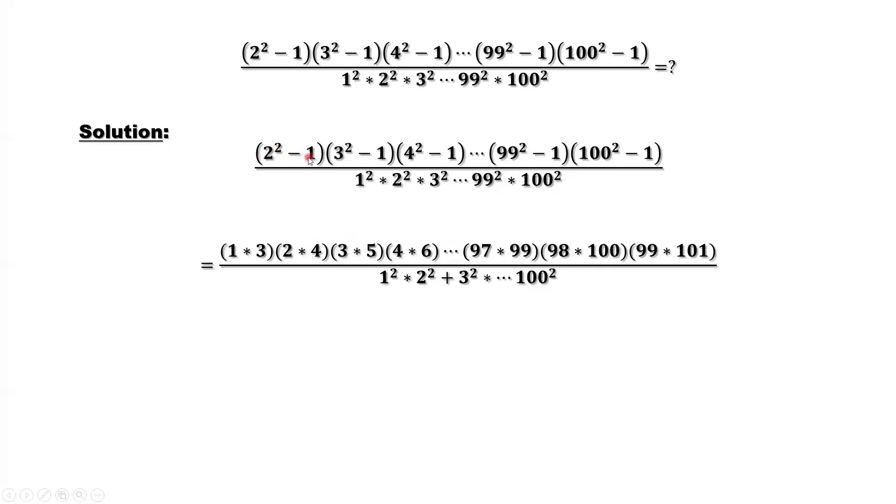2 squared minus 1 equals 2 minus 1 times 2 plus 1. 2 minus 1 is 1, 2 plus 1 is 3. Similarly for 3 squared minus 1, 3 minus 1 is 2, 3 plus 1 is 4. 4 minus 1 is 3, 4 plus 1 is 5.